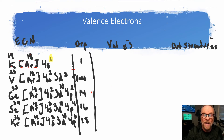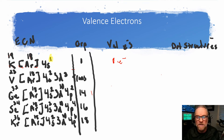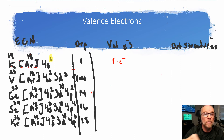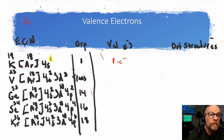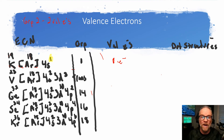— all group one elements have just one electron in that outermost shell, so potassium has one valence electron. Calcium is in group two, and all elements in group two have two valence electrons — two electrons in their outermost shell, written as 4s2.